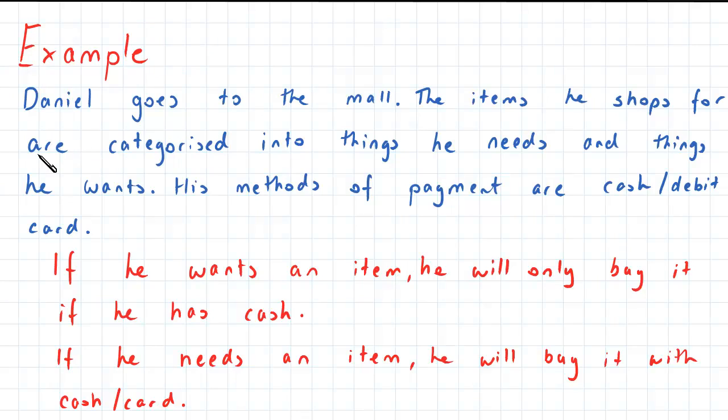So in this example, Daniel goes to the mall and the items that he shops for are categorized into things that he needs and things that he wants. And then his methods of payment are either cash or debit card.